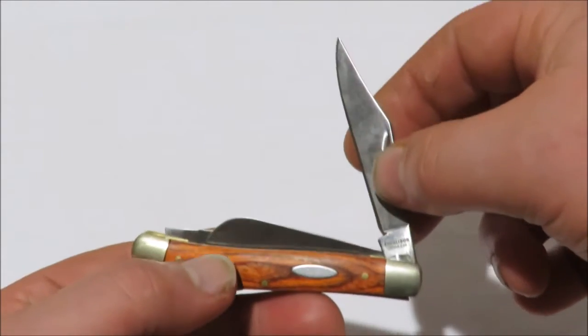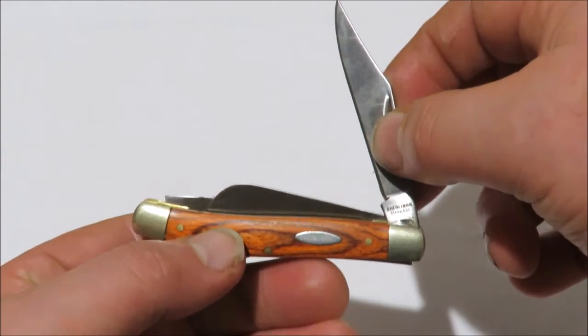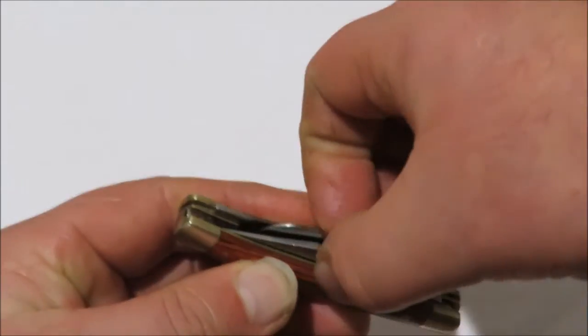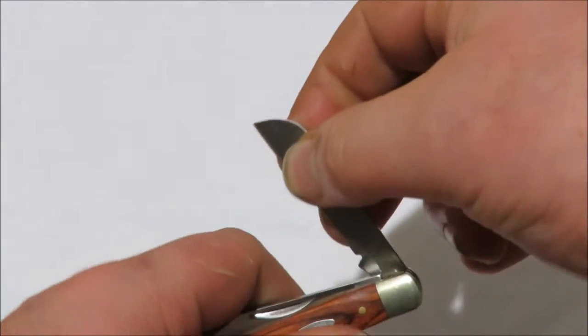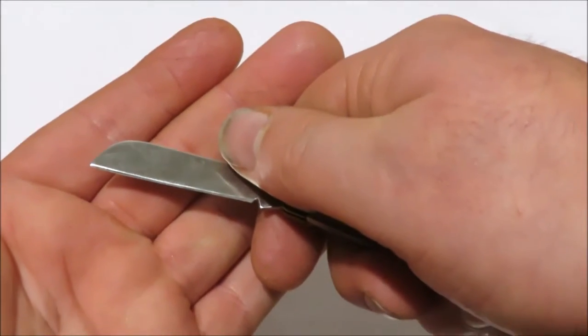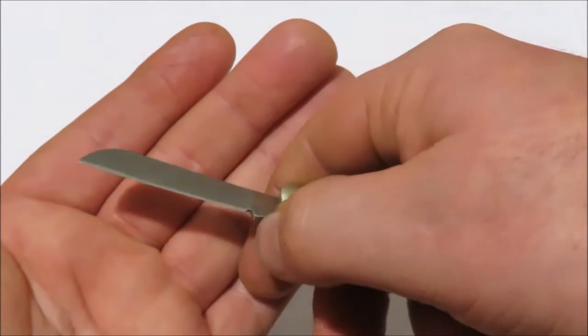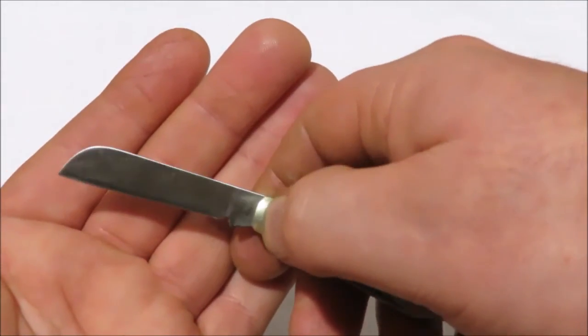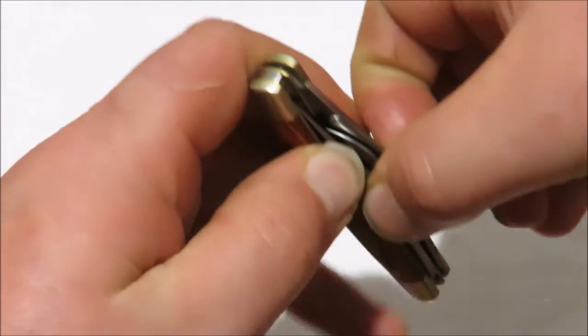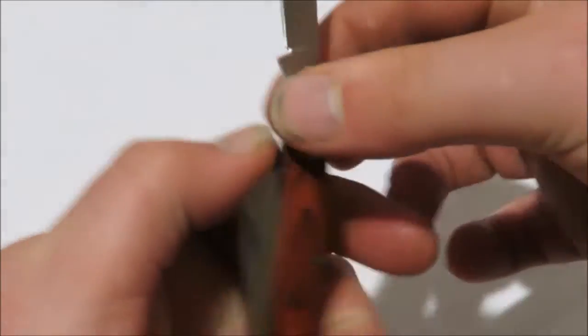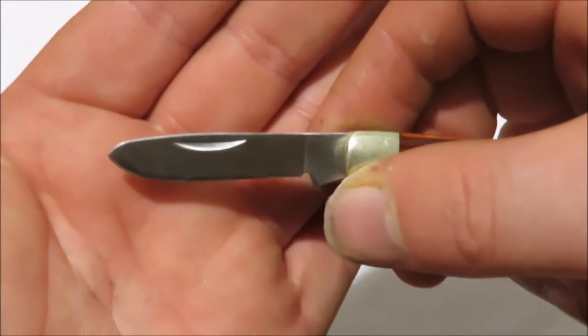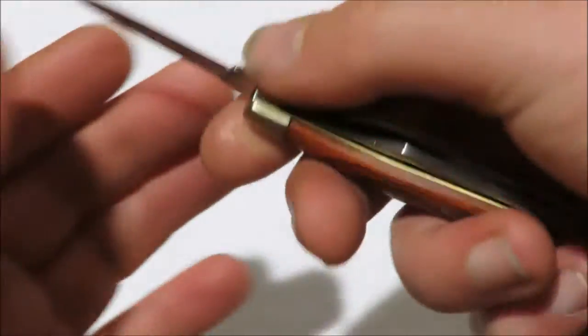I've used this a lot for rabbits and for carving. I've used the worm cliff blade a lot for opening packages, for cutting hay bales, for harvesting in the garden. And then the sheep's foot I've used a lot like peeling apples, things like that.